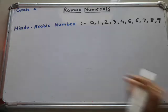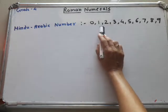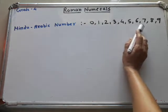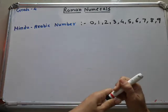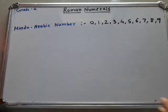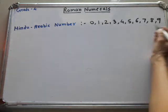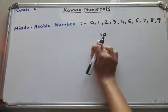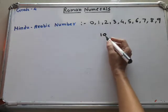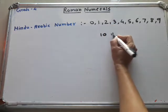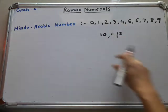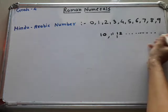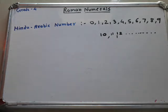In Hindu-Arabic numbers we use the digits 0, 1, 2, 3, 4, 5, 6, 7, 8 and 9. Using combinations of these we can make any number. After 9 we get 10, which is a combination of 1 and 0. Then 11 is 1 and 1, 12 is 1 and 2. In this way we write any number using combinations of these 10 digits.